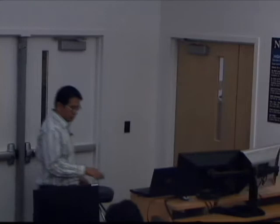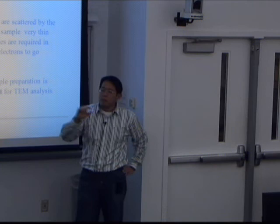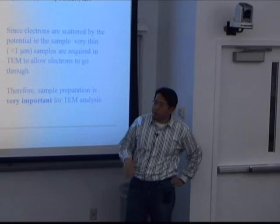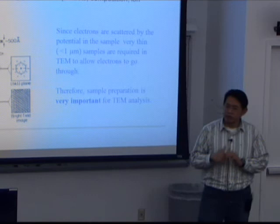The third limitation: TEM is very time-consuming for sample preparation. You want electrons to transmit through the sample, so you need to make a very thin sample. Thinner is better — thinner gives better resolution. Typically, if you want high-resolution TEM, you want to reduce the sample thickness to 50 nanometers, which is very challenging. We will talk more about sample preparation in the next class. In any case, you want the sample thinner than one micron to allow electron transmission.